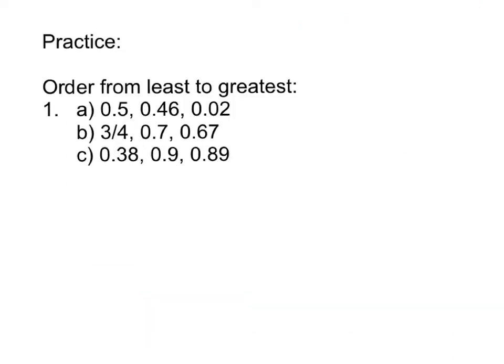All right, now you're going to do some practice. You're going to compare and order from least to greatest the following sets. So for A, 0.5 compared to 0.46 compared to 0.02. You can use decimal benchmarks. You can use equivalent decimals. It's up to you how you want to do that.